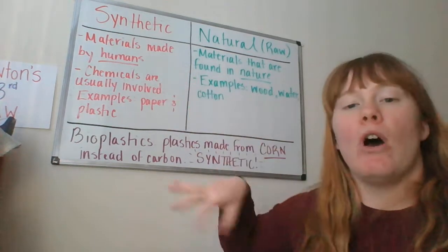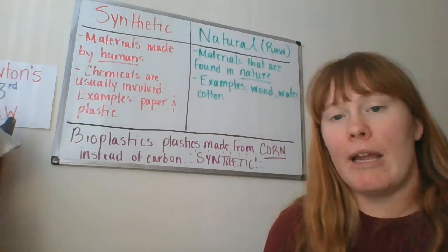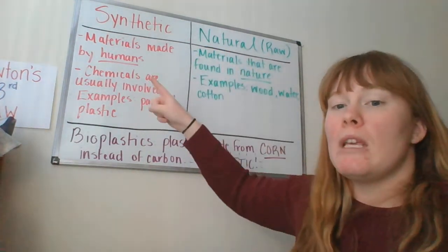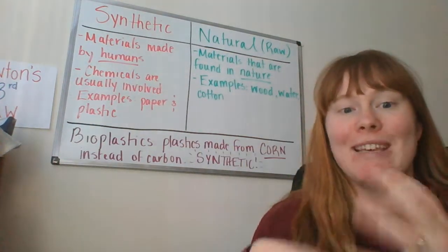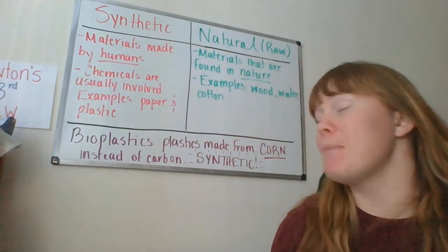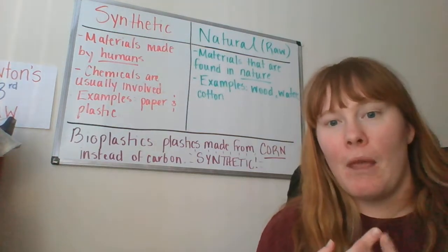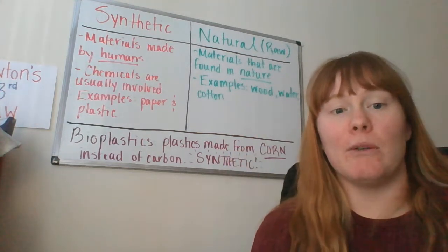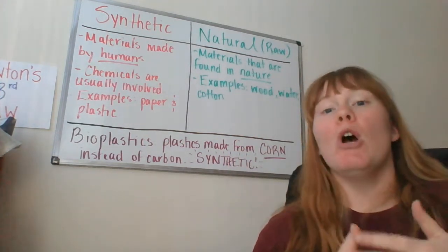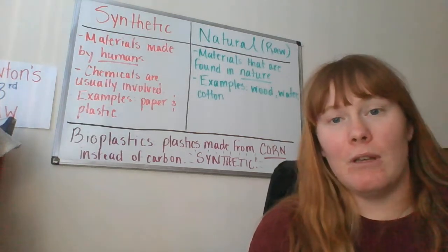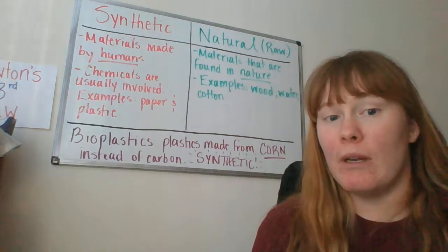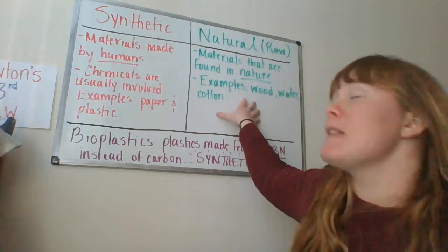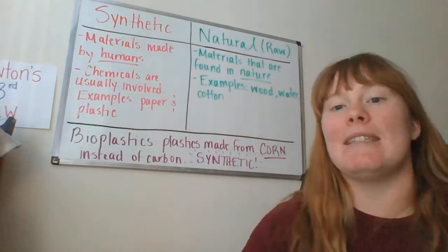Synthetic materials are materials that are made by humans. Synthetic materials might use something that's natural or raw, but usually you have to have chemicals within the process to make it. Perfect examples of this are paper and plastic. Paper comes from one of our natural materials — wood. However, in order to get that nice white color for the paper, we have to bleach it. Bleach is a chemical. So by adding a chemical to it and by humans having an impact on how it's made, we've taken something that's raw and turned it into something that is synthetic.